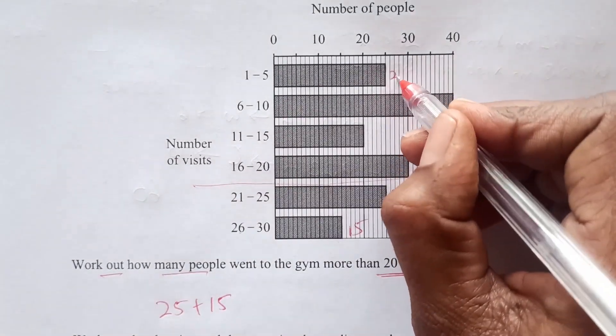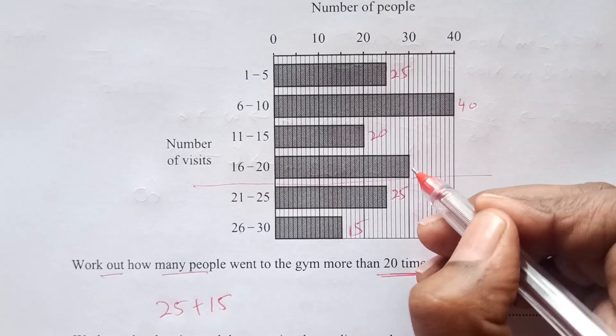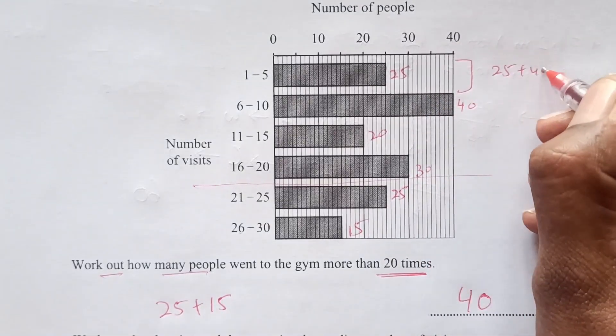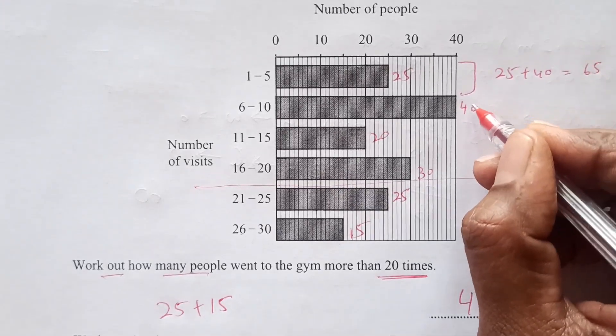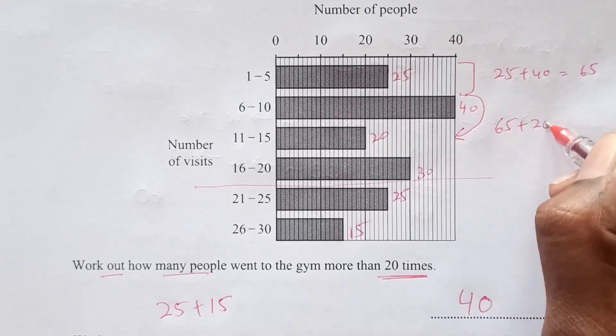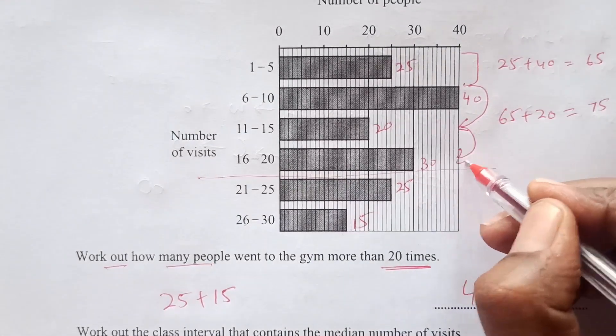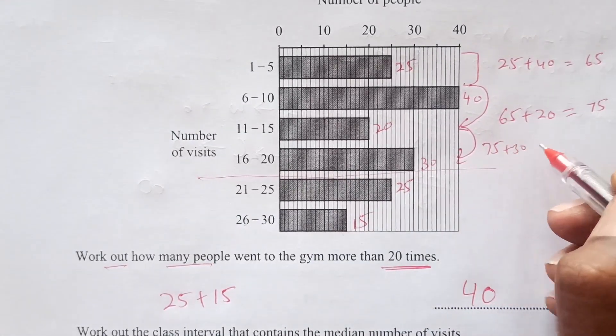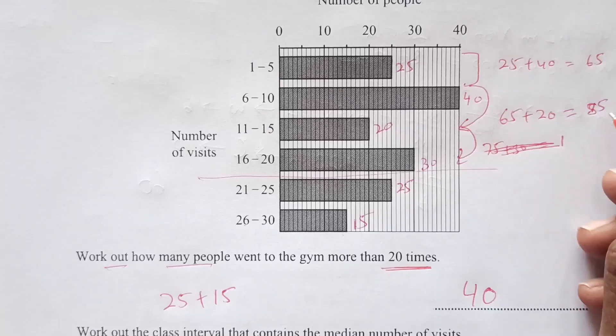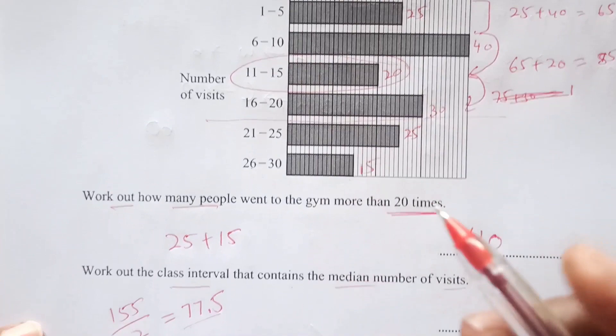Work out the class interval that contains the median number of visits. Median, we have 155 people divide by 2, it is 77.5. We have here 25, then 40, this is 20, this is 30. In this interval we have 25 plus 40 which is 65. From here to here we have 65 plus 20, 75. 77.5 will come here, which is this interval: 11 to 15.